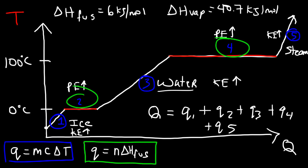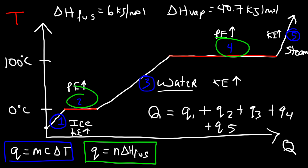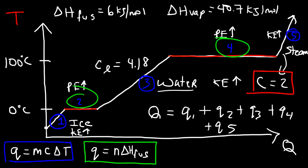The last thing to discuss is the slope of segments one, three, and five. The slope of segment three is not as steep as segments one and five, and that's due to the specific heat capacity of water. The specific heat capacity of liquid water is about 4.18 joules per gram per Celsius. The specific heat capacity of steam is about 2 joules per gram per Celsius. A substance with a low specific heat capacity has a very steep slope, and a substance with a high specific heat capacity has a lower slope — they're inversely related.